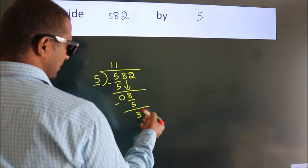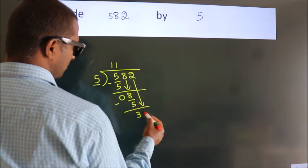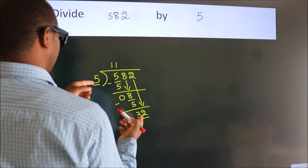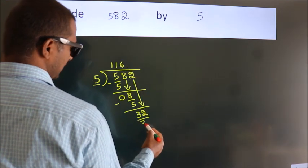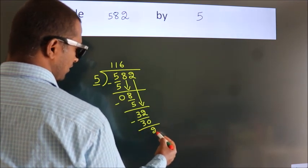After this, bring down the next number, so 2 down, so 32. A number close to 32 in the 5 table is 5 times 6, 30. Now we subtract, we get 2.